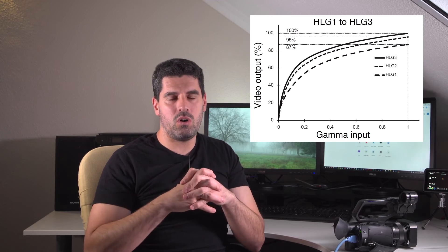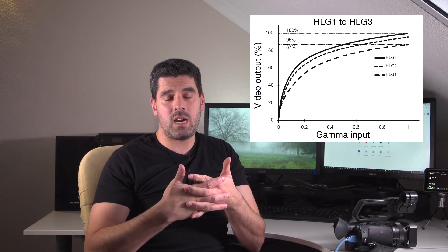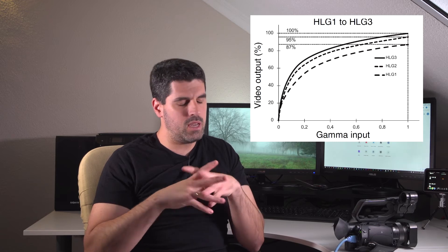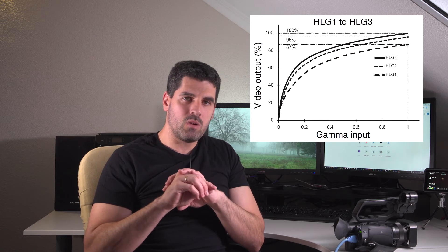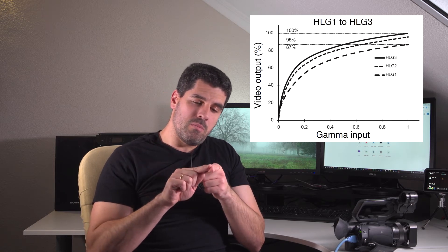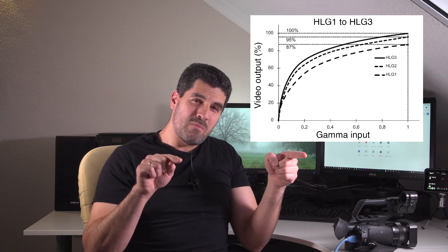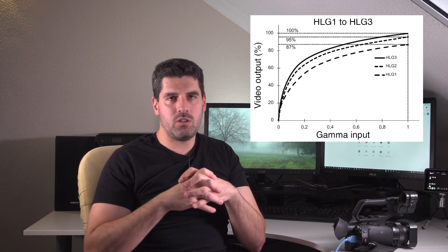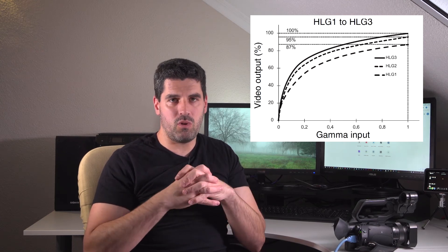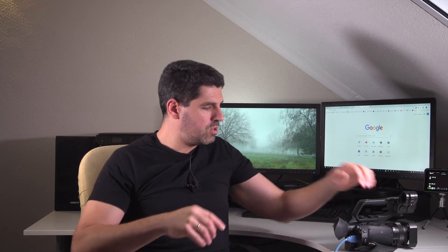HLG is not for color grading, despite the fact that you can obviously do it. Inside HLG you can choose different variants. I recommend the default HLG gamma curve or HLG3, which provides a bigger dynamic range at the cost of a little more noise. But it's something you can easily live with, and it's very similar to the default HLG.